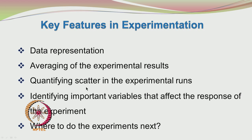So the scatter is responsible for you having to do the averaging. It makes a lot of sense to quantify the scatter in experimental runs. Experimental runs are always associated with scatter, and it is very important for us to quantify it. After having done that, we will be able to identify which are the important variables that influence the response of the experiment, and then investigate where to perform the next set of experiments.